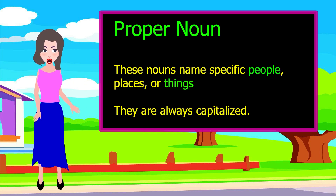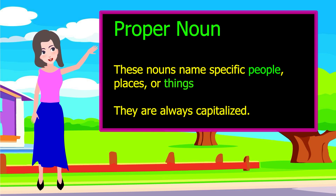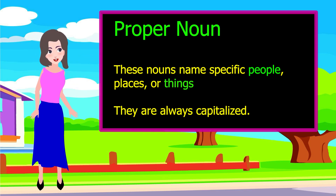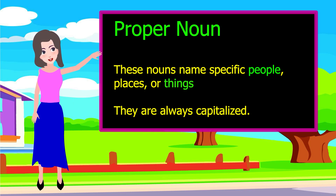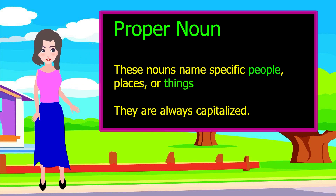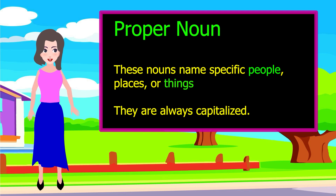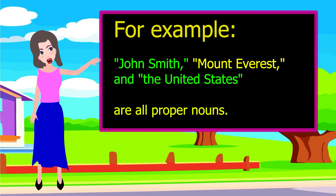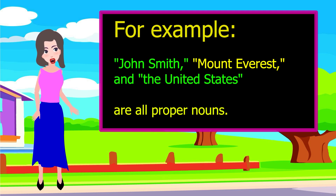Proper nouns name specific people, places, or things. They are always capitalized. For example, John Smith, Mount Everest, and the United States are all proper nouns.